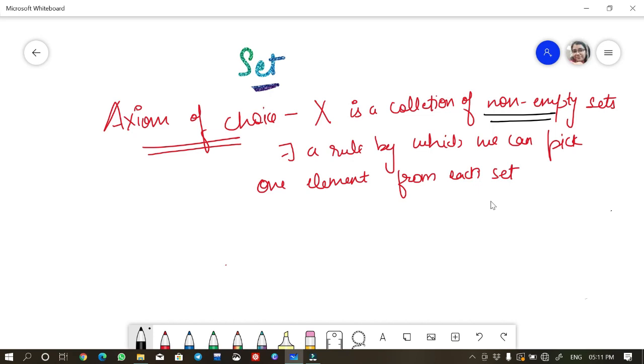By this axiom of choice I should explain this as this. X is a set of non-empty sets. So I can write A, B, C. Maybe there are only three elements and all these three are non-empty.